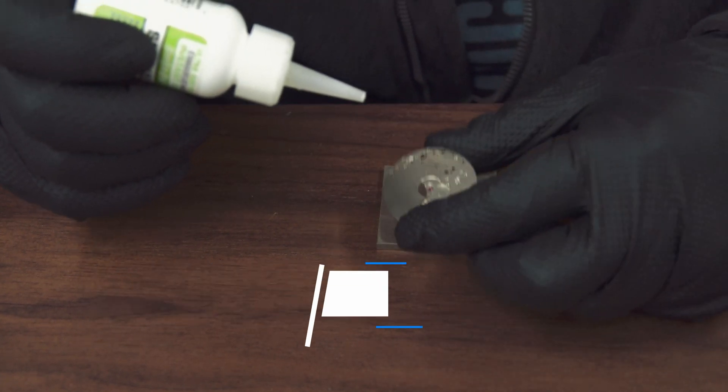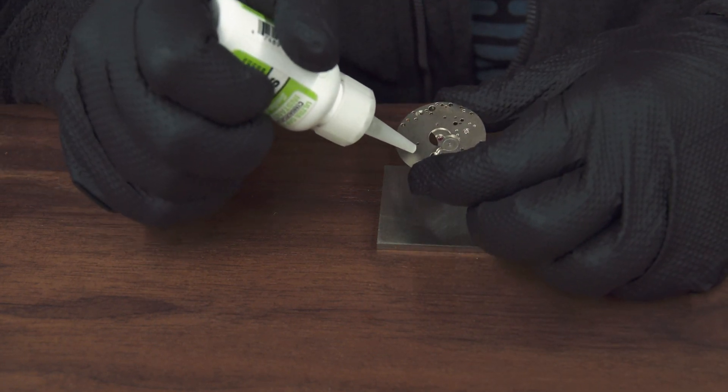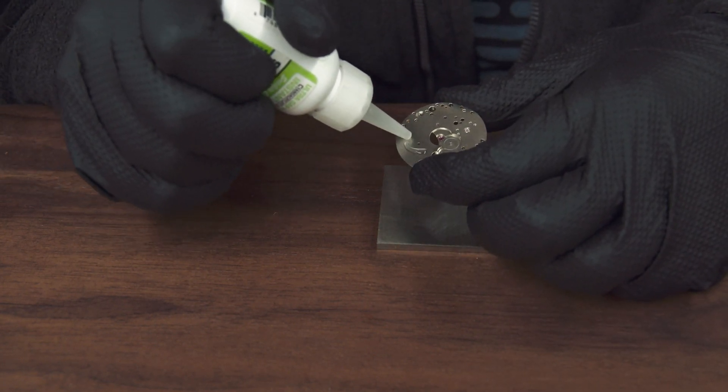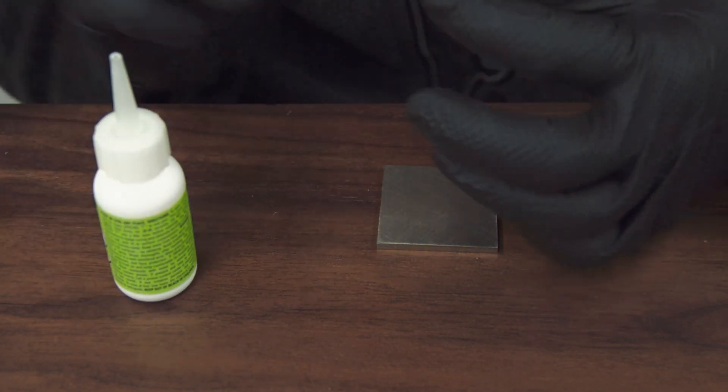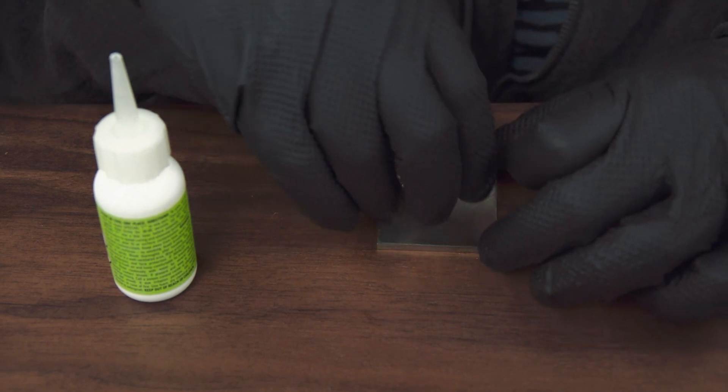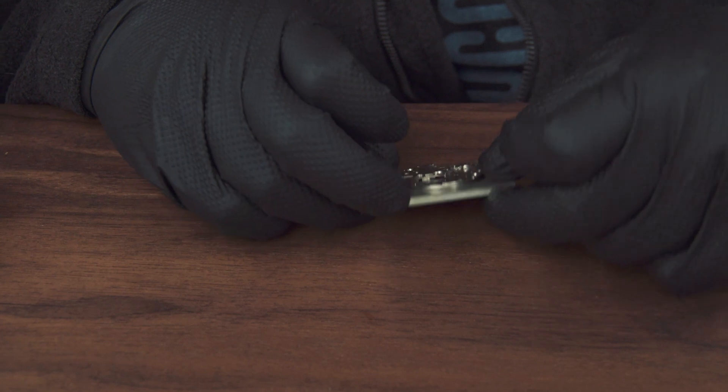I'm using CA glue to glue the existing main plate to the new bridge material. CA glue is a really effective way of holding the two plates together while we're doing the initial layout of the pinholes and screw holes. Later on we won't need them because we'll have the pins and screws to hold the bridge in place.